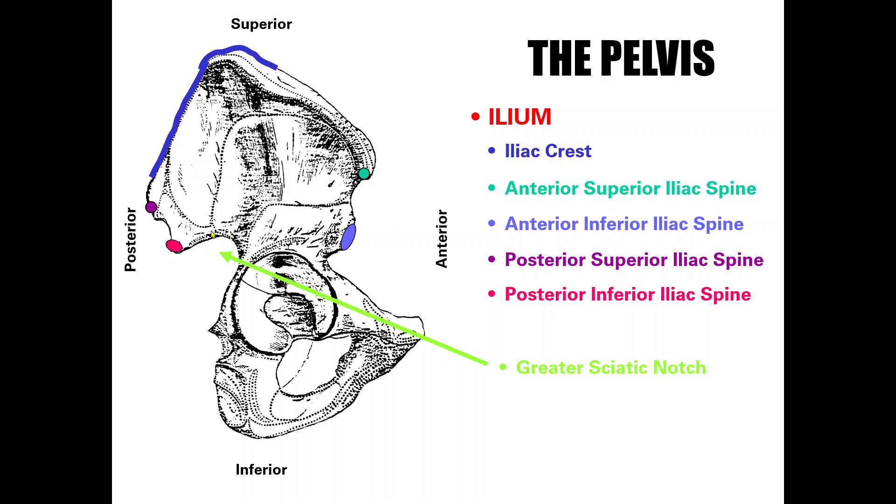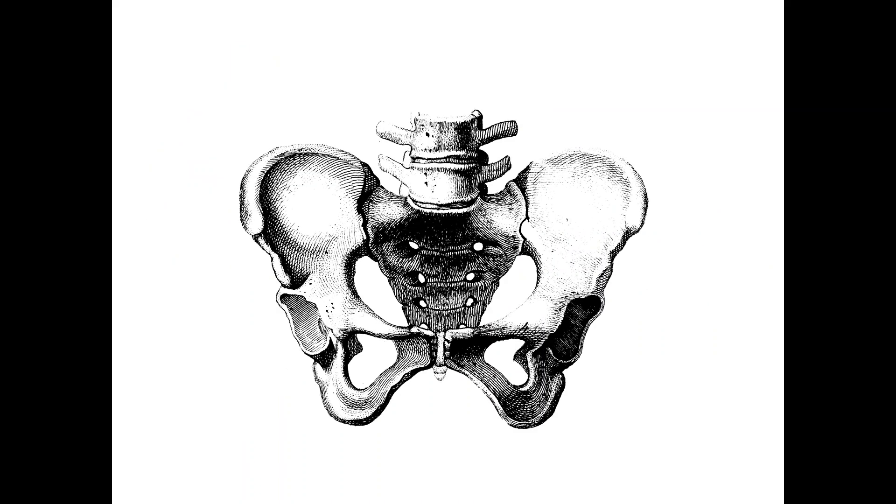We also have the greater sciatic notch, which is where your sciatic nerve passes through. Some people have a narrow notch, so they can be more prone to something like sciatica because this is where that quite large nerve exits out of your pelvic girdle. Here's the whole pelvis together, the sacrum in the middle and the two oscoxci that form to make the pubic symphysis. And here are your acetabulum on the lateral side where your femur would articulate.